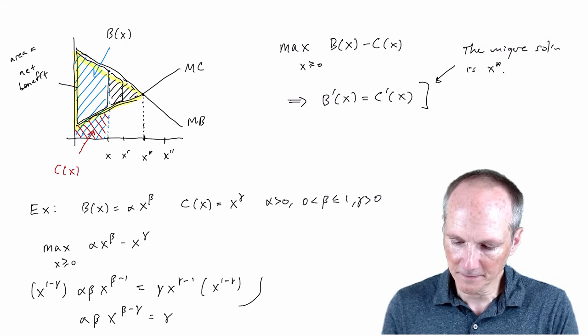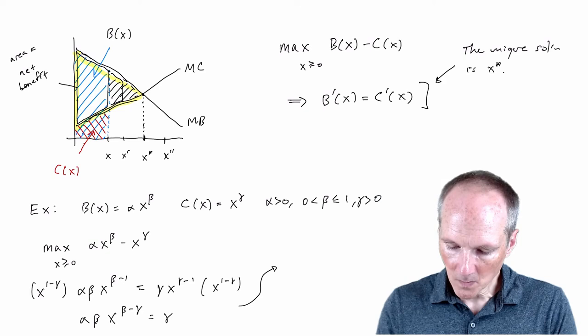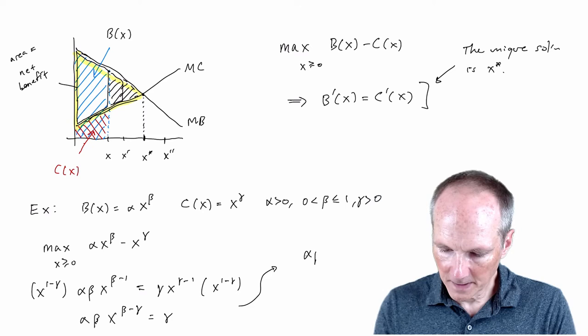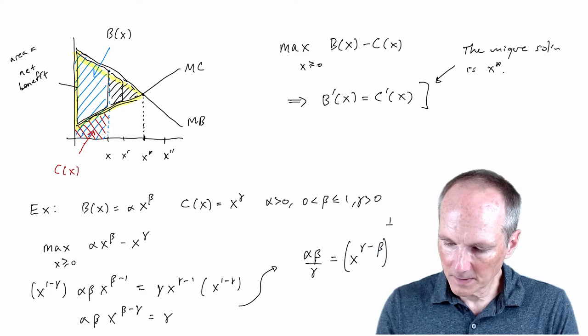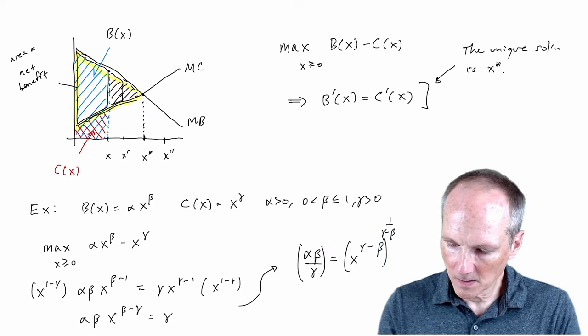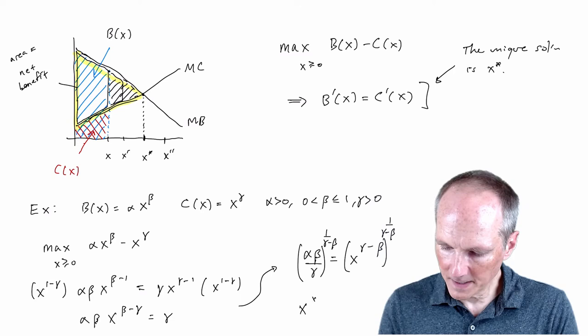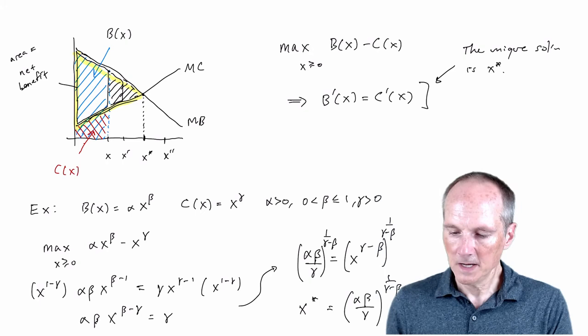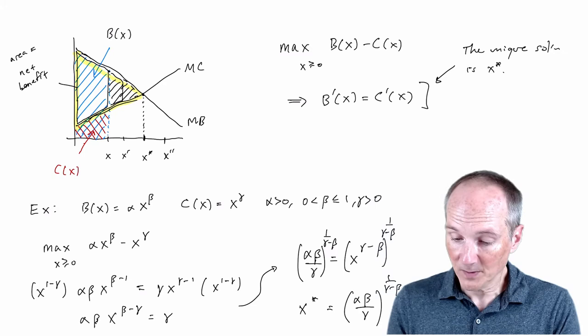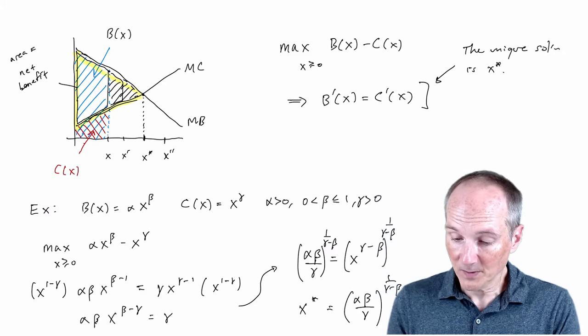With beta less than gamma we get a positive exponent. Moving the term to the other side: alpha·beta divided by gamma equals x^(gamma−beta). Raising both sides to the power 1/(gamma−beta), we get x-star equals (alpha·beta / gamma)^(1/(gamma−beta)). So we take the first-order condition, do some algebra, and get an explicit expression for the optimal scale. You can then experiment with the parameters to see what effect they have on the scale.